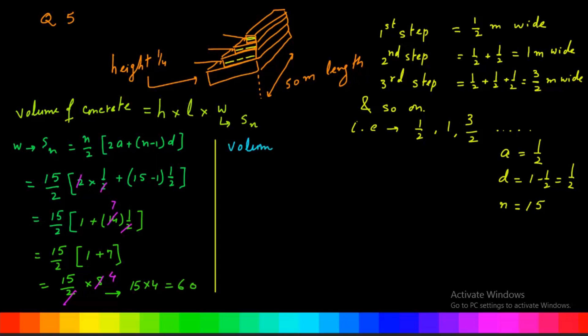Let us find the volume. Height 1/4, length 50, and total width is equal to 60. On simplification, it is 50 multiplied by 15, that is 750 meter cube.